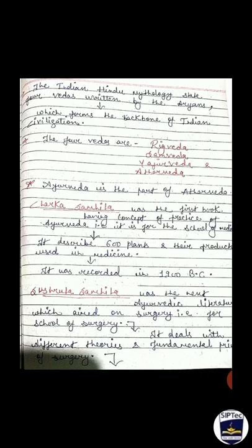Next we will talk about the Charaka Samhita. It was the first book having the concept and practice of Ayurveda — it is for the school of medicine. In that book, it described 600 plants and their products used in medicine. The Charaka Samhita was recorded in 1900 BC and is considered the first book of Ayurveda.